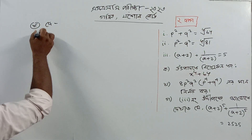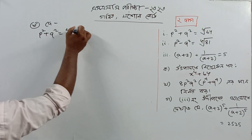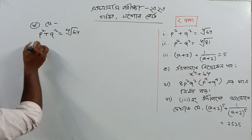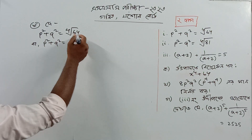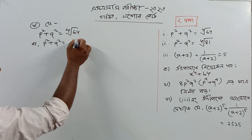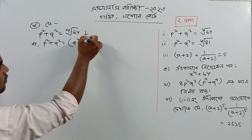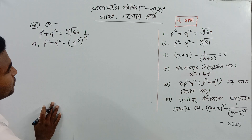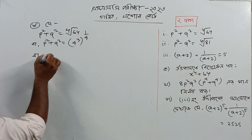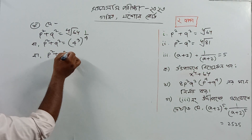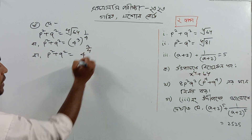So, p square plus q square equals 4 root of 64. What are these p square plus q square equal to — 4 cubed? Take a look: what is Ps² plus Ps² equal to 4 power minus 3y4?